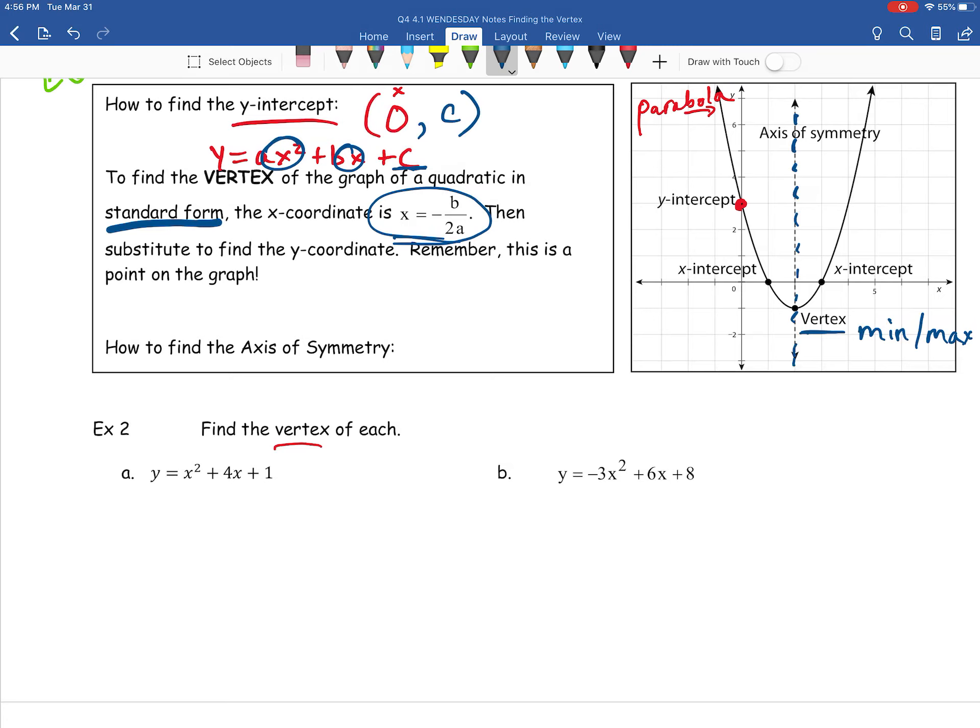To find your vertex, for example 2a, let's go ahead and see this in action, what it looks like. I always encourage my guys to do two things to start out when you're trying to find the vertex. First of all, identify what is your a, what is your b, and what is your c.